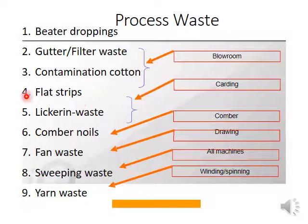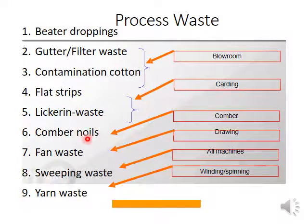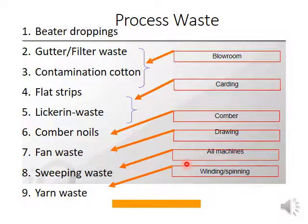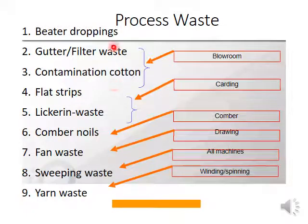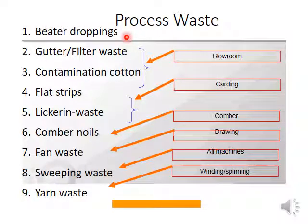In carding, flat strips and licker-in waste are the main wastes. In comber, noil is the main category of waste generated. In draw frame, fan waste is generated. From all machines, sweeping waste is collected. In winding and spinning, yarn waste is generated. Beater droppings consist of the trashy material removed during blow room cleaning.